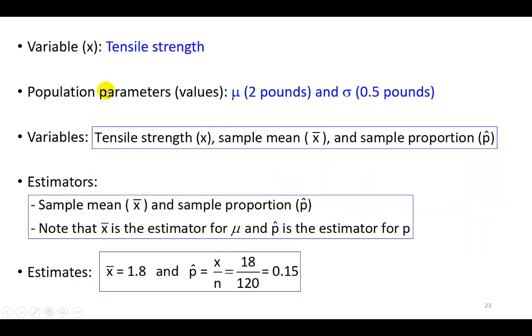A couple of helpful pointers going forward. The variable here is tensile strength. The parameters that we're going to be looking at would be the population mean μ and the population standard deviation σ. Remember, parameters are the measures or descriptors of a population. The variables that we're going to be looking at here is not only the tensile strength variable, which it is a variable because it can be any value, but in particular, the estimators: the sample mean x-bar and the sample proportion p-hat, bearing in mind that the sample mean is the estimator for the population mean, while the sample proportion p-hat is the estimator for the population proportion.